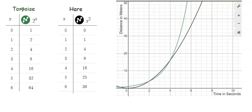Looking at these two models, here we have the tortoise and the hare. I used Desmos to create a graph representing both. You can see the tortoise already has their 1 meter head start and starts out ahead of the hare. But as time passes, right at 2 seconds, the tortoise and the hare are at the same distance — which, looking at our table, would be 4 meters. So after 2 seconds, they are both 4 meters away from the starting line.